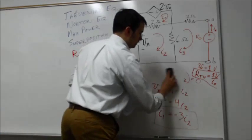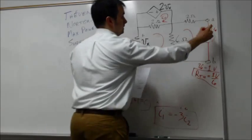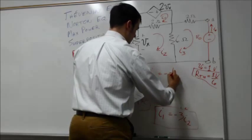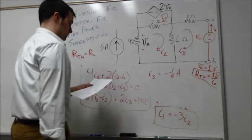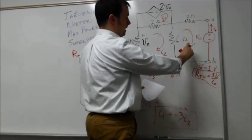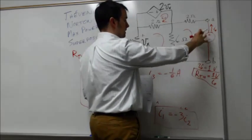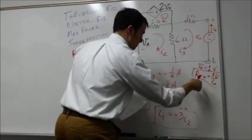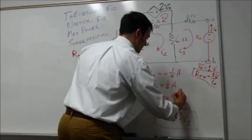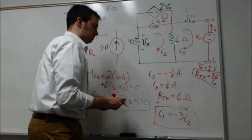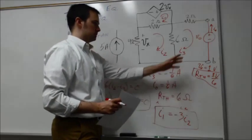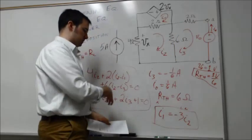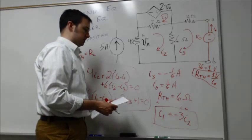Solving all three mesh equations gives I₃ = −1/6 amp. The current I₀ we're looking for is simply the negative of I₃, so I₀ = 1/6 amp. Therefore, the Thevenin resistance is R_TH = 1 V / (1/6 A) = 6 ohms. We've successfully found the Thevenin equivalent resistance using the test source method.